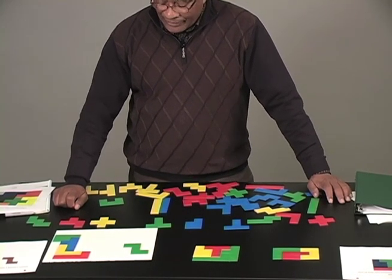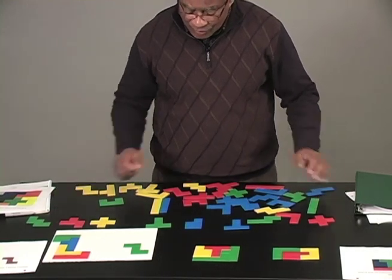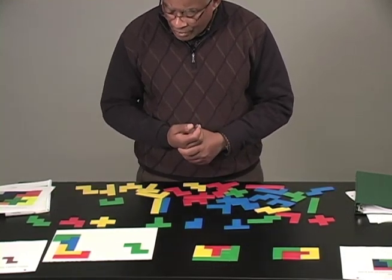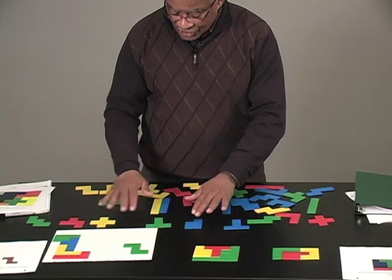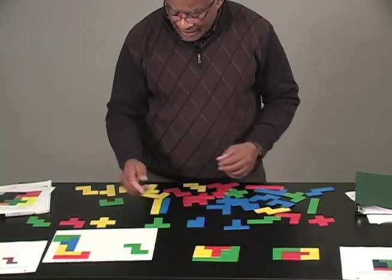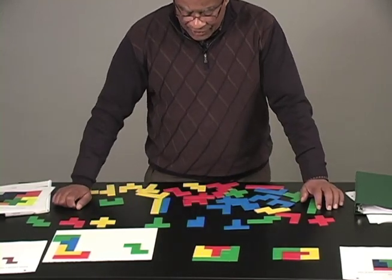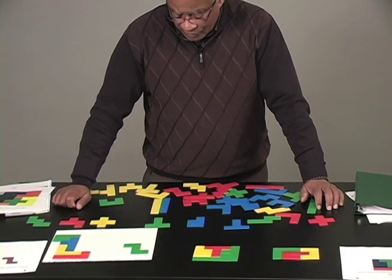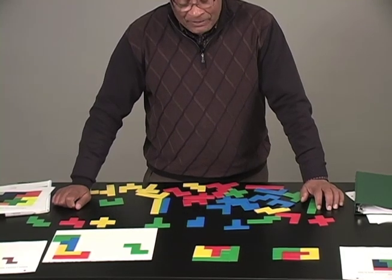Now once a student has done that, there are quite a few activities one can give them. First of all, the area for each is the same. Each one has an area of five square centimeters, or five square units. Now what about the perimeter?